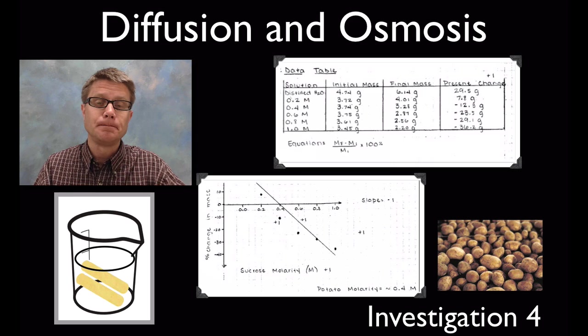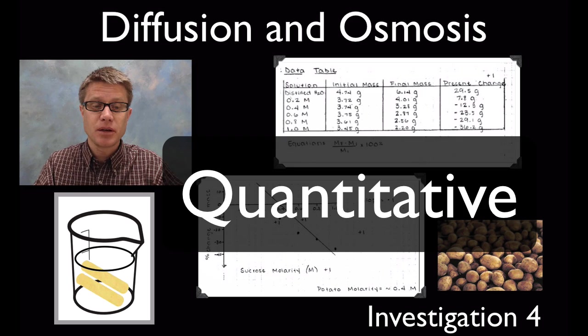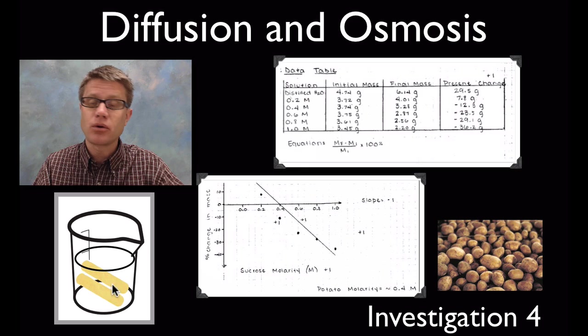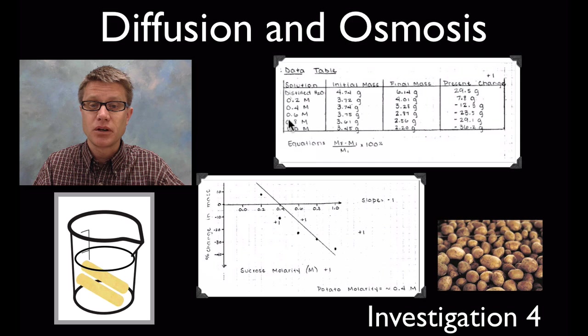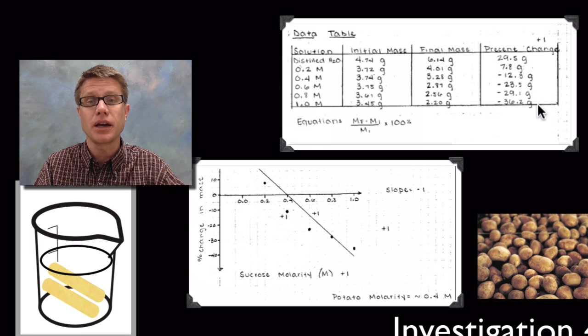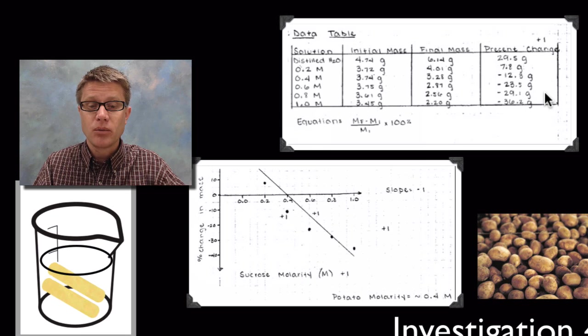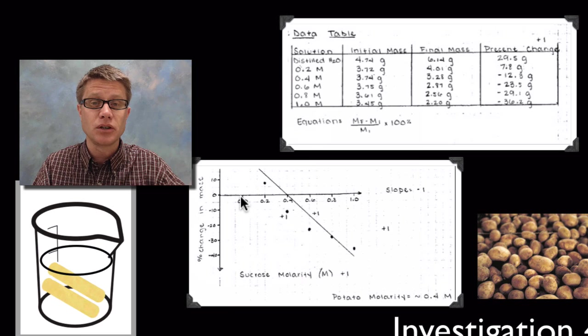The next one is more gathering of data. I do this as an inquiry lab. The students are taking cores of potato and putting them in different concentrations of sugar water. You can see here that they're putting them in distilled water all the way up to one molar sucrose solution. Then they're measuring their percent change overnight. They let it sit overnight.